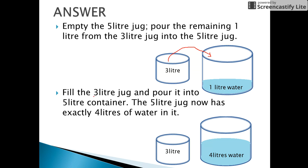We again fill the 3-litre jug and pour it into the 5-litre container. Now 3 litres from this jug into the 5-litre container makes exactly 4 litres.